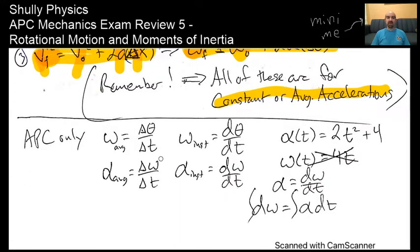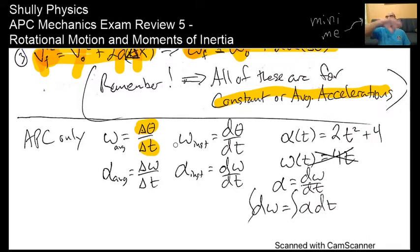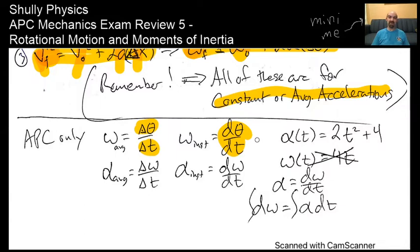For an average or constant angular velocity, use delta theta over delta t. But if you need to look at an instantaneous angular velocity—if there's some kind of changing force that turns on and off or changes as a function of time—you'll need to think of angular velocity as d theta over dt. Think of that as the instantaneous value.